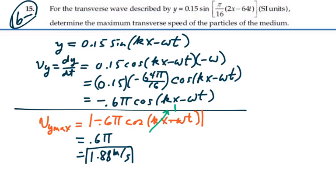So our maximum transverse speed, just like simple harmonic motion, is going to equal omega times a for that part of the motion, which in this case is 1.88 meters per second. Thank you.